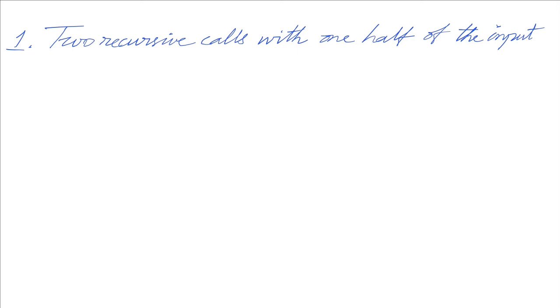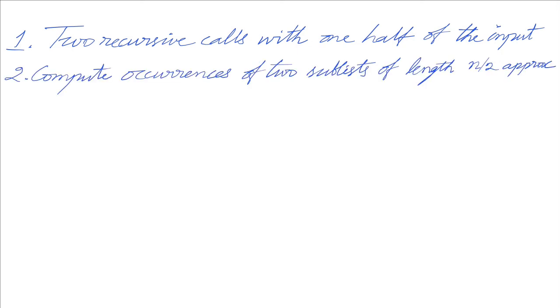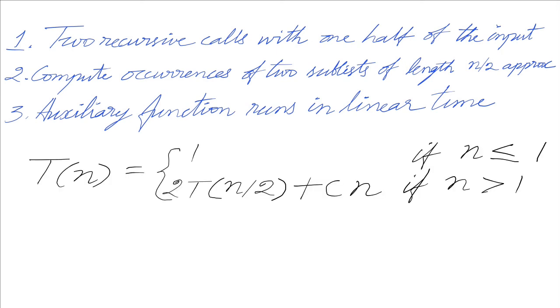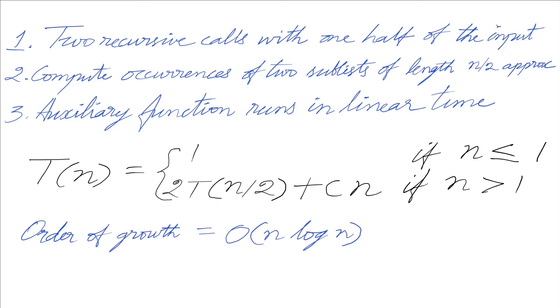What is the time complexity? We are making two recursive calls each with one half of the input — majority on B and majority on C. We also compute occurrences for two sublists of length n/2 approximately, so occurrences is called twice for both sublists. The auxiliary occurrences function runs in linear time. The recurrence for time complexity resolves to O(n log n).